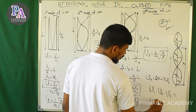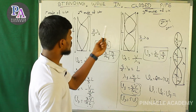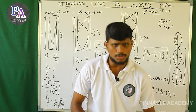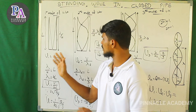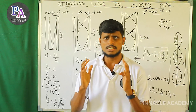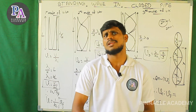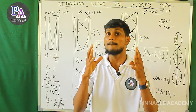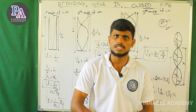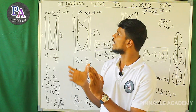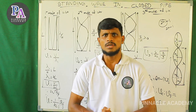ν₃ equals v by lambda. For a stretched string, v equals root of T by mu. For an open pipe or closed pipe, velocity v equals root of B by rho, because that's how sound travels. So that's the wave velocity formula. Next let's take a look at the Doppler effect.